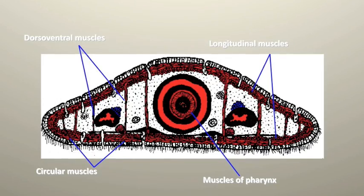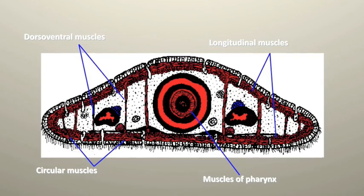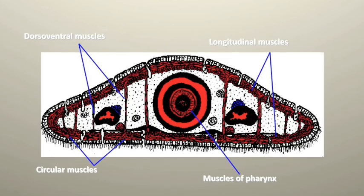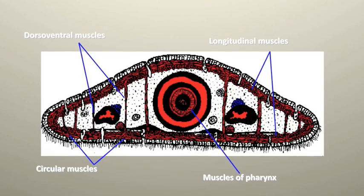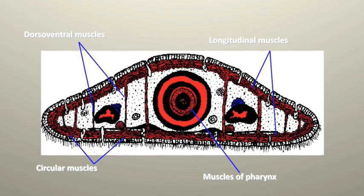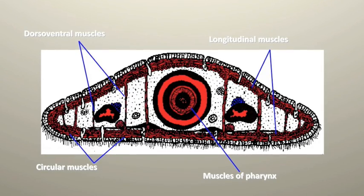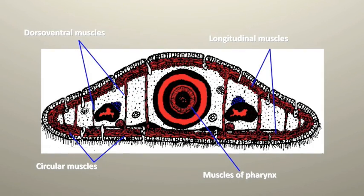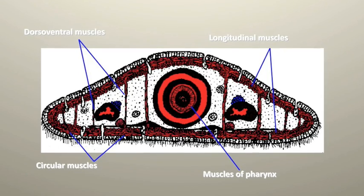Locomotion of flatworms uses many parts of the body. The epidermis or skin cells have cilia or microvilli that help with locomotion, shown at the bottom of the picture. Looking at the muscle cells just underneath the epidermis, there are two main types: circular muscles, which go around the diameter of the body, and longitudinal muscles, which run the length of the body. There are also dorsal-ventral muscles that work similarly to our obliques.